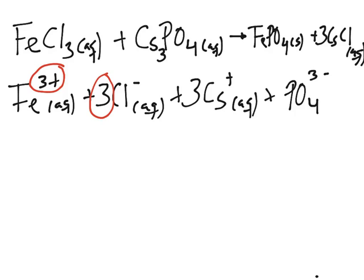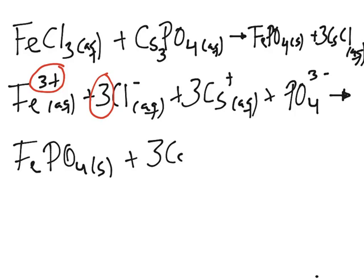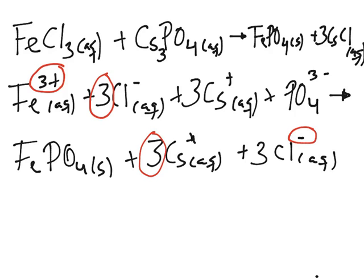That is our reactant side. On the product side, FePO₄ is a solid, so it won't dissociate in water — we leave it as is. Then we have the three cesium chloride, which is aqueous, so it ionizes into 3Cs⁺ aqueous plus 3Cl⁻ aqueous. As long as you have the same number of each ion on both sides, you're fine. This is our total ionic equation — everything written with their ions when ionized.